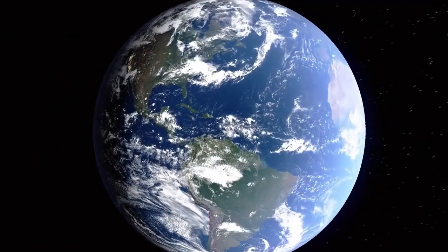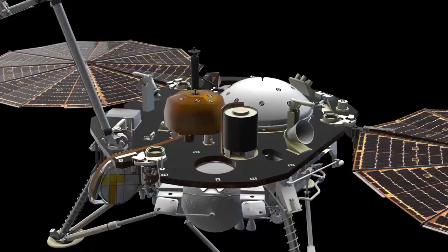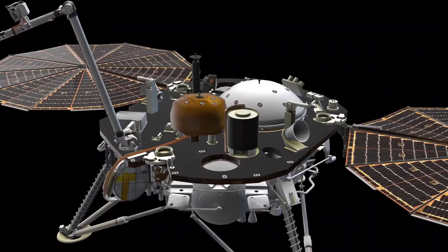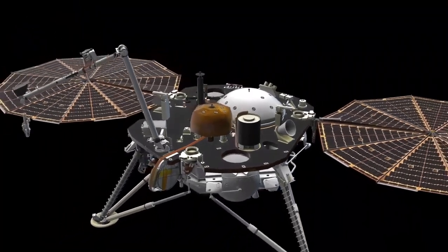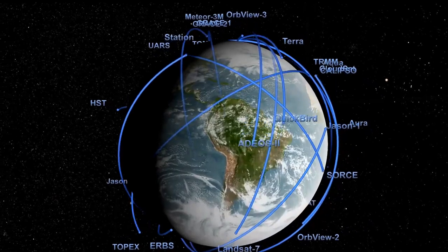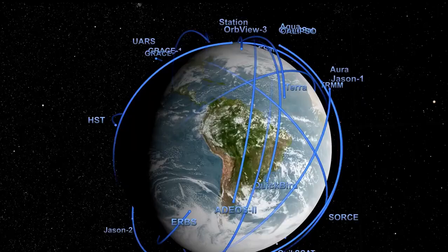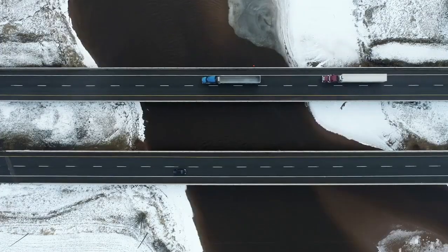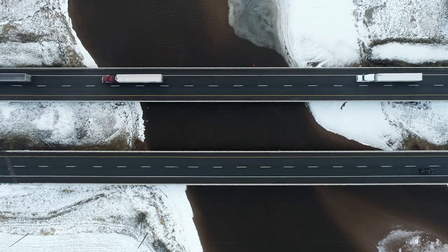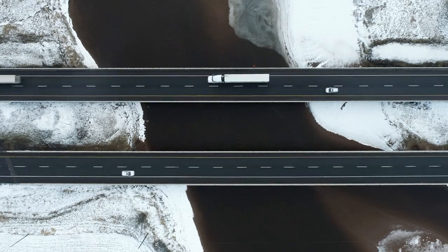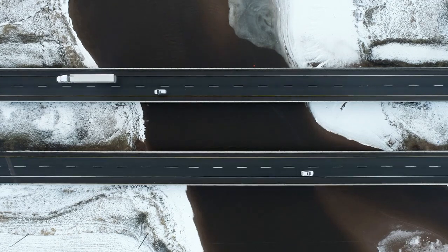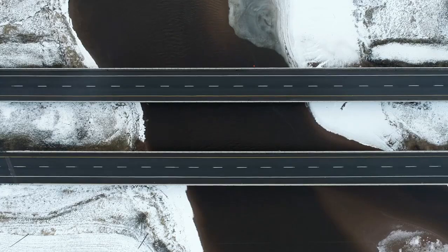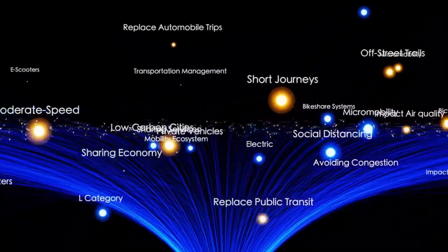While impressive, these speeds are a tiny fraction of the speed of light, making their progress small in comparison. Consider the challenge of reaching the nearest star system beyond our Sun, Proxima Centauri, a small red dwarf star located approximately 4.24 light-years away. At the speed of light, it would take about 4.24 years to reach it. However, at the speeds of the Voyager spacecraft, it would take an estimated 70,000 years to cover that distance, underscoring the vastness of the universe and the difficulties of interstellar travel.